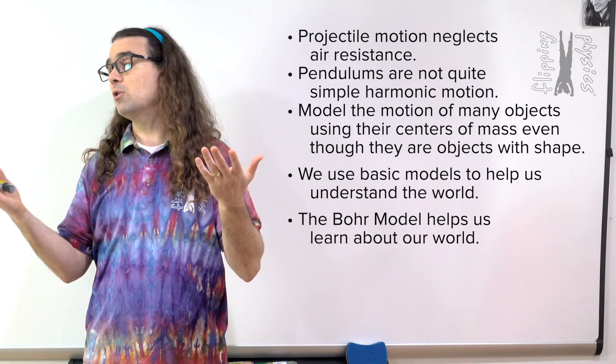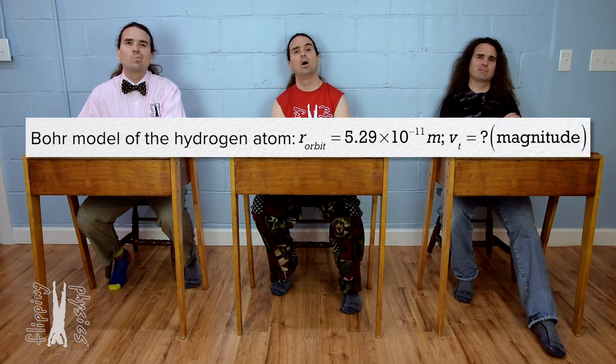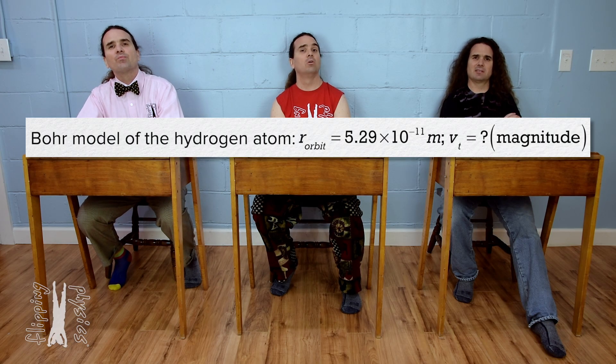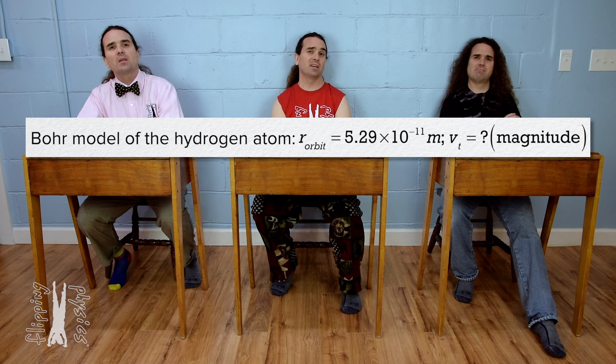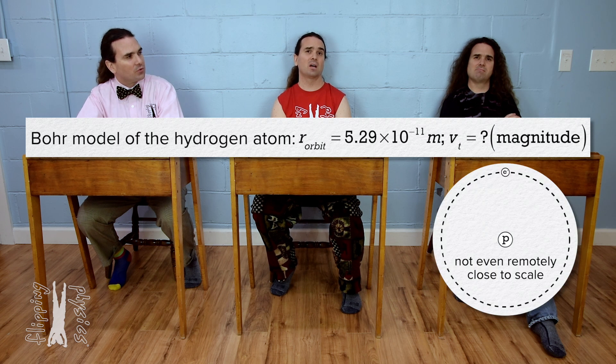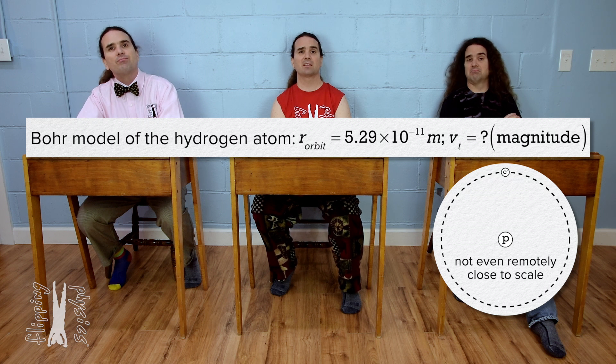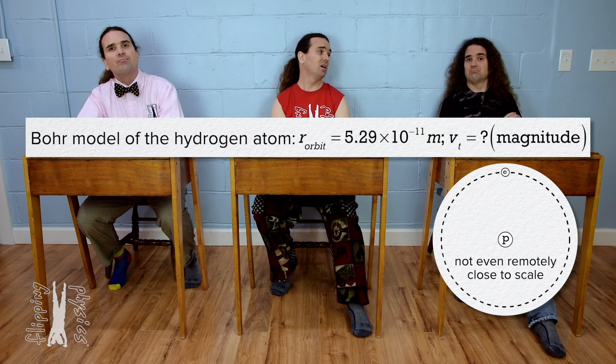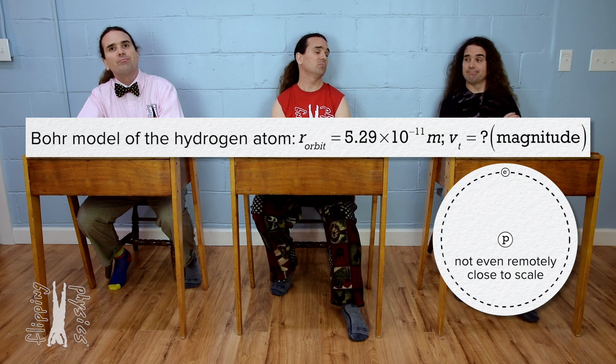Okay. Bo, please solve for the speed of the electron. I don't really know where to start. The electron is moving in a circle around the proton. Maybe start with a free body diagram of the forces acting on the electron and then sum the forces on the electron in the in direction. That's a good idea, Bobby. Thanks. You're welcome.